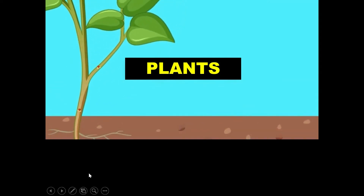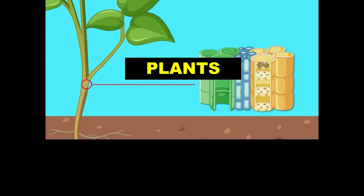The vascular tissues in plants transport water, minerals, and sugars to various plant parts. The main conducting system includes xylem, which transports water and minerals from the roots to different parts of the plant, and phloem, which plays an important role in transporting organic compounds from the site of photosynthesis to other parts of the plant.